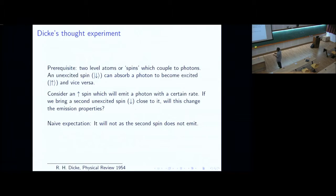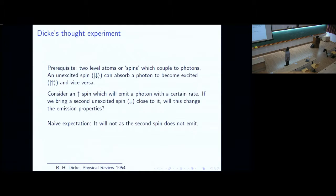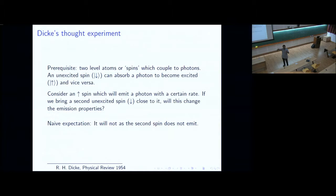Let me begin in 1954 with the famous thought experiment by Dicke. To understand this thought experiment, we first need to understand two-level atoms — which I will call spins for the rest of this talk. They couple to photons: an unexcited spin can absorb a photon and become excited, and vice versa. Dicke asks: consider an up-spin which will emit a photon with a certain rate. Now suppose you bring a second spin that is unexcited — that's down — close to the first spin. Will this affect the emission from the first spin or not?